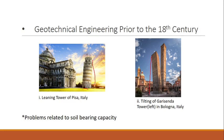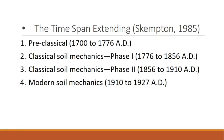In true engineering terms, geotechnical engineering began in the 18th century. The most famous examples related to soil bearing capacity problems include the Leaning Tower of Pisa and the tilting of the Asinelli tower in Bologna. Based on the nature of study, the era of geotechnical engineering was described by Skempton in 1985.